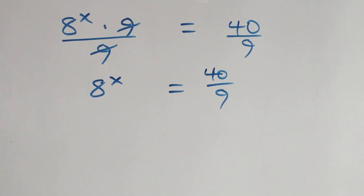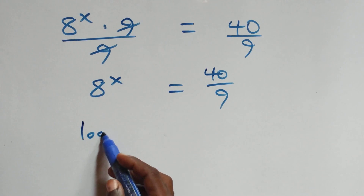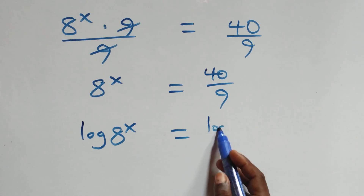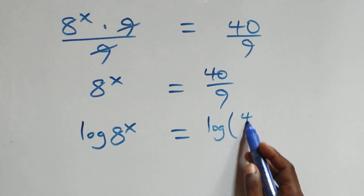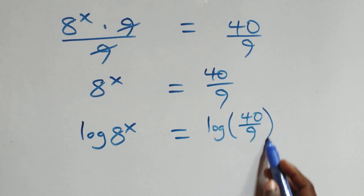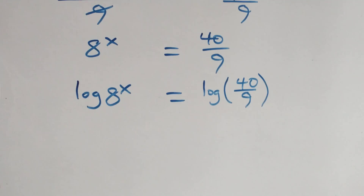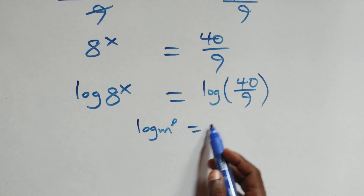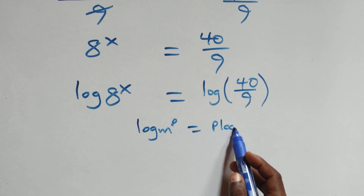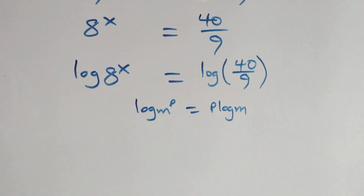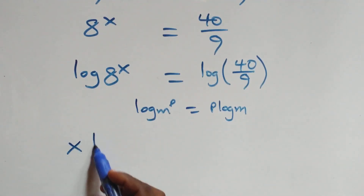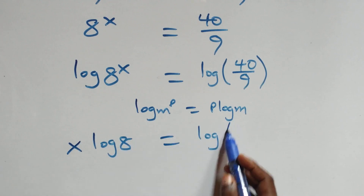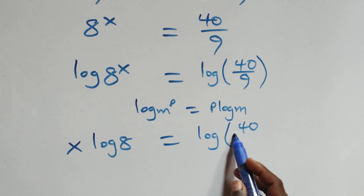Next step: we take the log on both sides. Here we have log of 8 raised to power x equals log of 40 over 9. And from here we apply the power log rule: log m raised to power p is the same thing as p log m. So here we have x log 8 equals log 40 over 9.